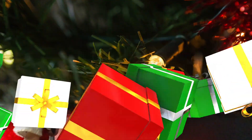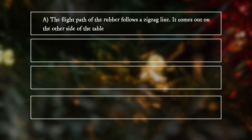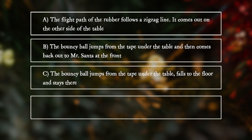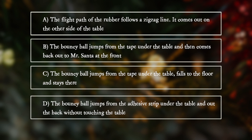What happens? A: The flight path of the bouncy ball follows a zig-zag line and it comes out on the other side of the table. B: The bouncy ball jumped from the tape under the table, then comes back out to Mr. Santa at the front. C: The bouncy ball jumps from the tape under the table, falls to the floor and stays there. D: The bouncy ball jumps from the adhesive strip under the table and out the back without touching the table.